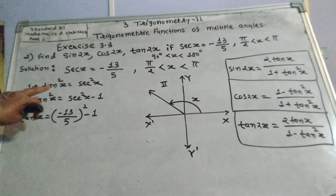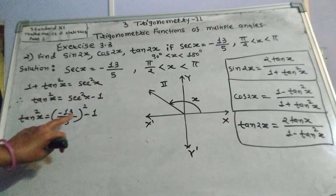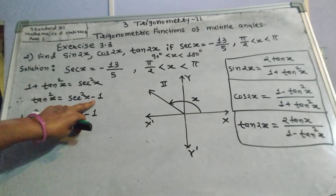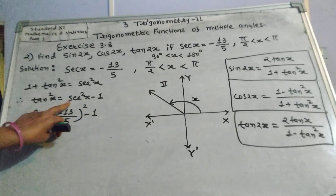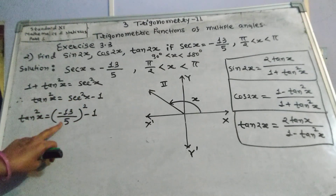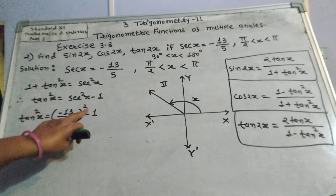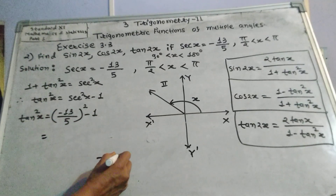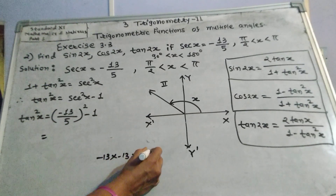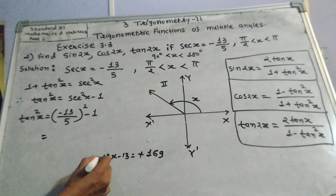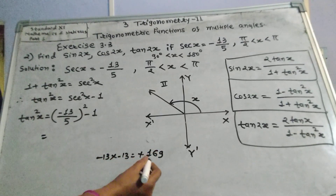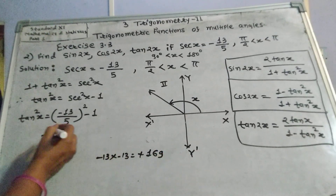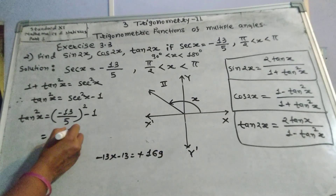Using the identity 1 plus tan²x equals sec²x, therefore tan²x equals sec²x minus 1. Putting in the value of sec x: negative 13 upon 5, squared, minus 1. Now negative 13 times negative 13 means positive 169, since multiplication of two negative numbers gives a positive number. So 13 squared equals 169.